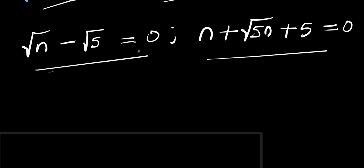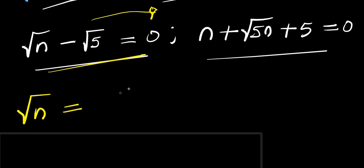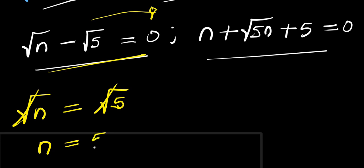For the first equation, root n minus root 5 equals zero: moving root 5 over gives root n equals root 5. Squaring both sides, n equals 5. This is n₁.